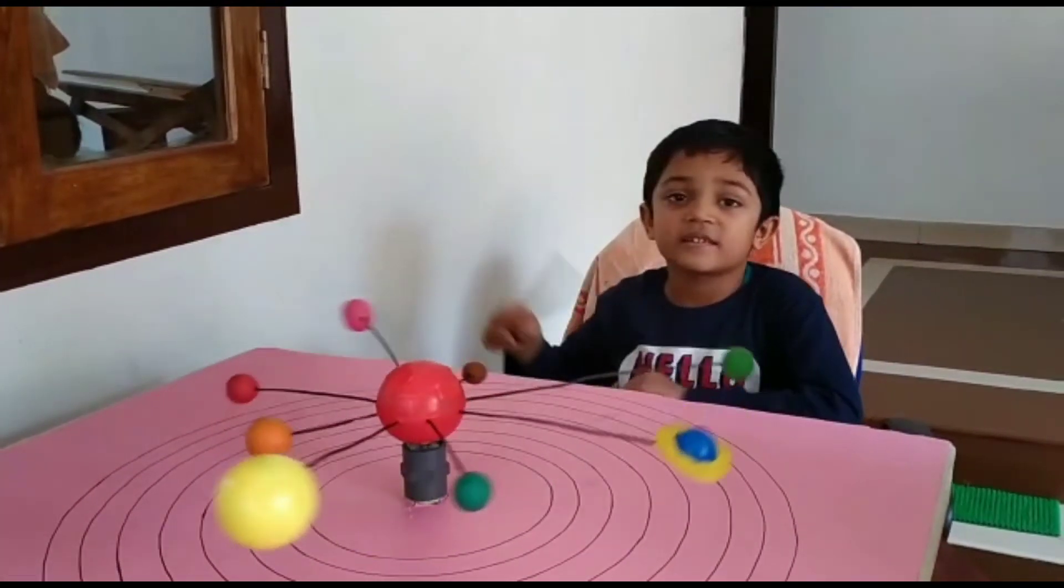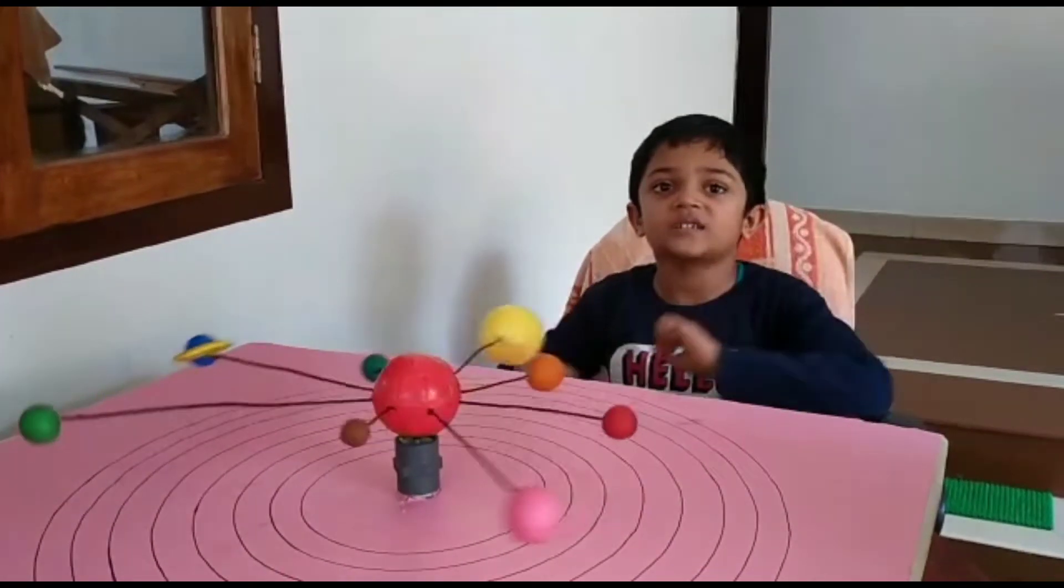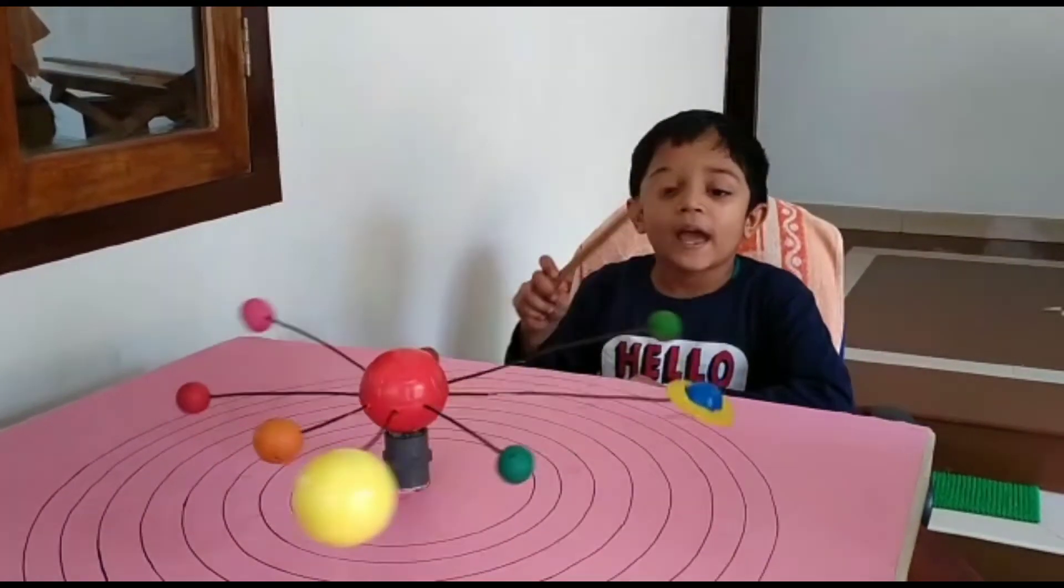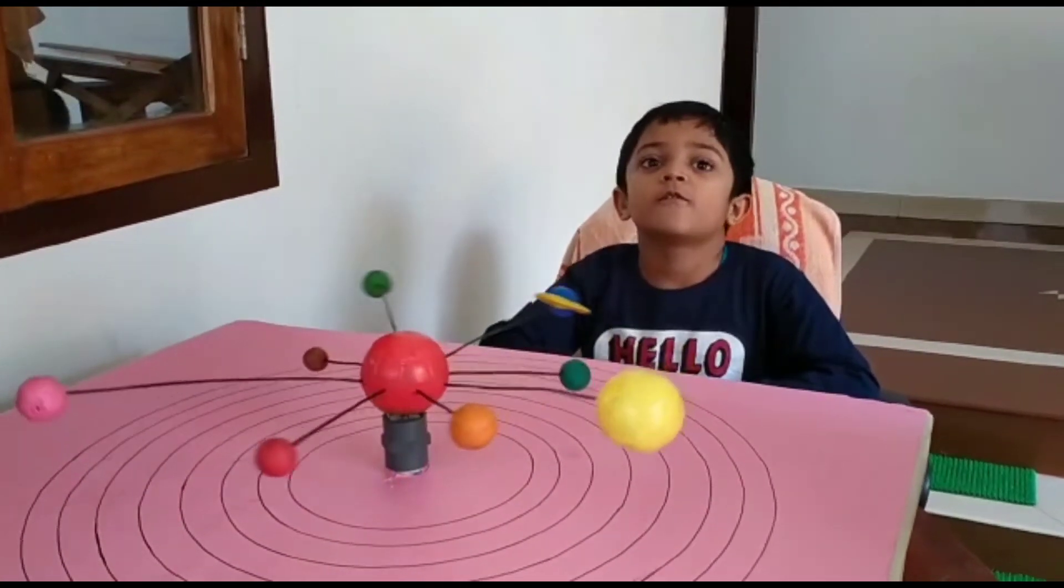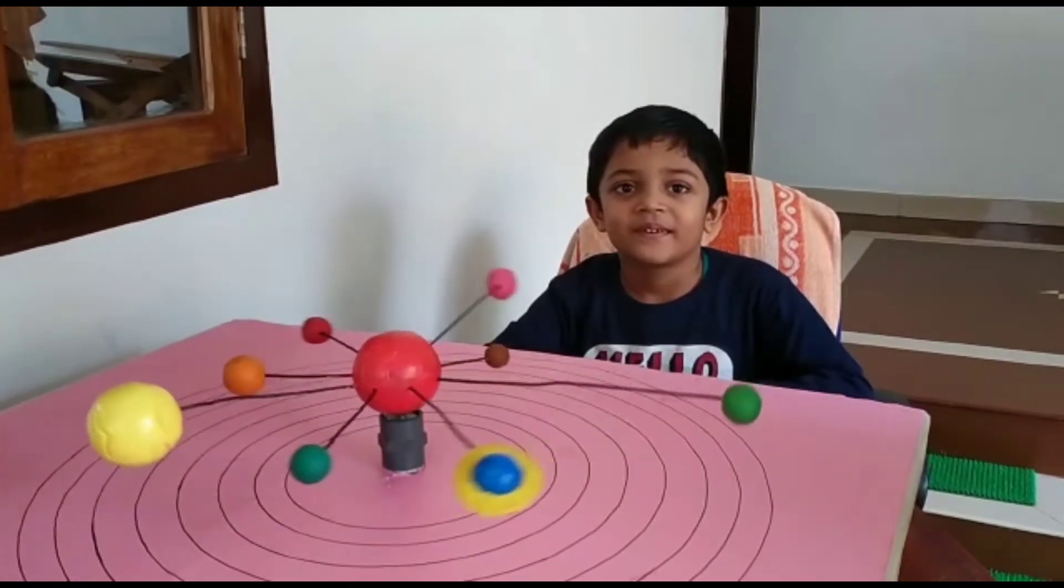Uranus is the third largest planet and Neptune is the furthest from the sun. Thank you.